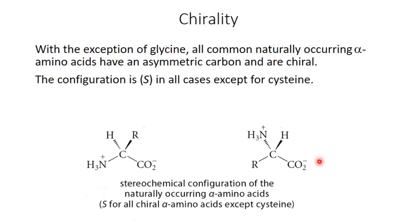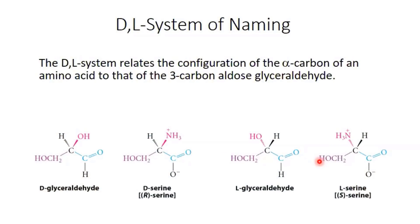With the exception of glycine, all common naturally occurring alpha amino acids have an asymmetric carbon and are chiral — the configuration is S in all cases except cysteine. So 19 of the 20 amino acids are homochiral. Nobody has ever made homochiral amino acids from a prebiotically relevant route — never. The Miller-Urey experiment makes them racemic, a one-to-one mixture. The D/L system relates the configuration of the alpha carbon to that of the three-carbon aldose glyceraldehyde.